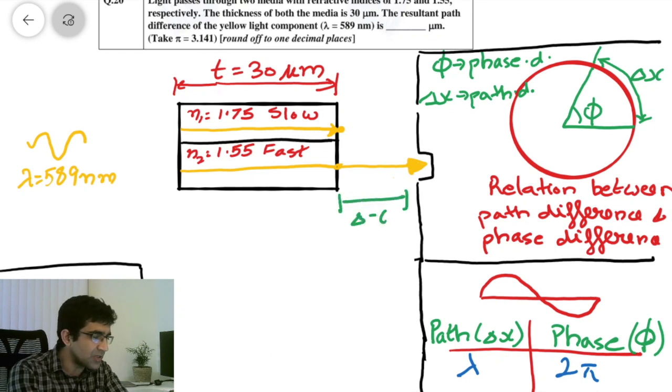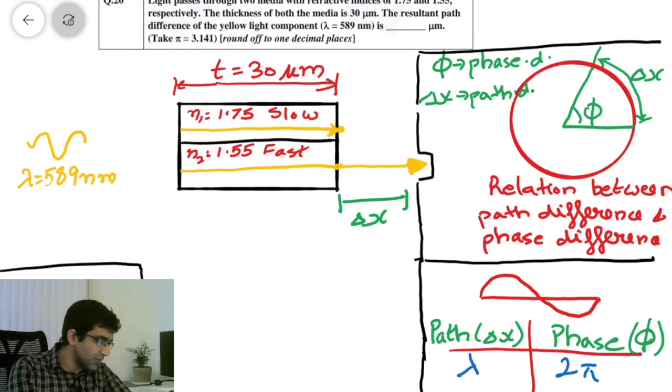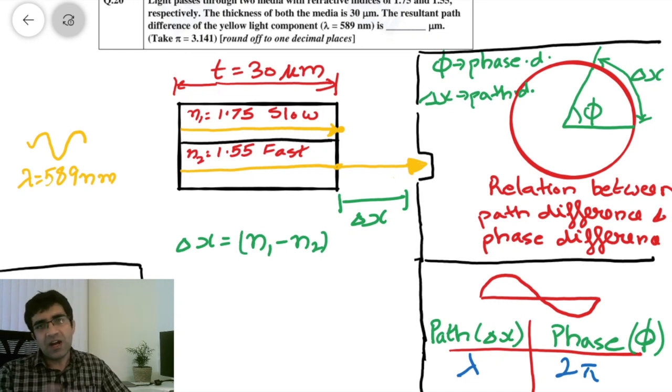And how do you actually calculate this path difference? This is something that we can solve here. So this is delta x, what I will write here as the path difference. Now it's very easy to calculate. So you can just use those speed distance time formulas that you know. And there is a standard formula that is given for this question. So that formula is that delta x is simply equal to n1 minus n2, so that is the difference of the refractive indices, and you multiply that with the thickness.